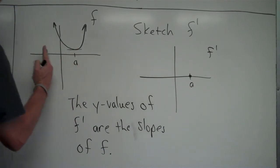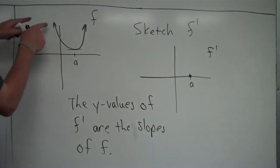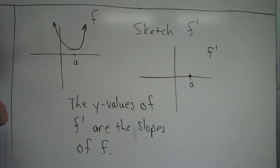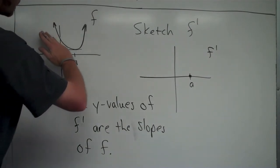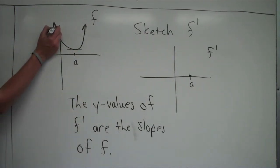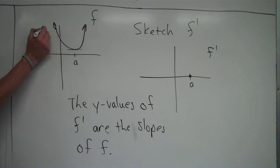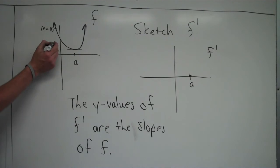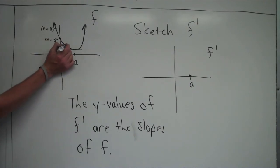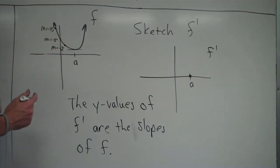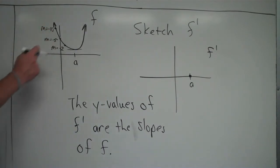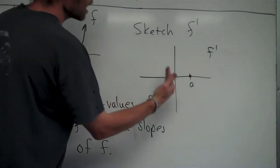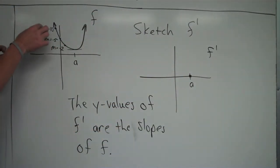If I look to the left-hand side of x equals a, the slope of f is negative. It looks like it starts out quite steep and gets less and less steep as we approach a. So let's say the slope starts at about m equals negative 10, then around x equals 0 it's about m equals negative 5, and then further right it's maybe m equals negative 2. So as I move from left to right, the slopes are negative but going from negative 10 to negative 5 to negative 2. The y-values of f prime should carry that same property.